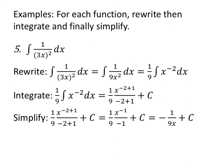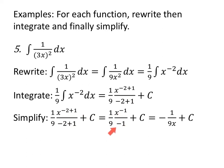For the integral of 1 over (3x) all squared dx: the three is being squared this time. Simplify: one over (3x) squared is one over nine x squared. Factor out the one-ninth as a constant; x squared in the denominator becomes x to the negative two. So we have one-ninth times the integral of x to the negative two dx. Apply the power rule: add one to the exponent and divide by the new value. Negative two plus one is negative one, yielding one-ninth times x to the negative one over negative one. Simplifying: negative one over nine x plus C.